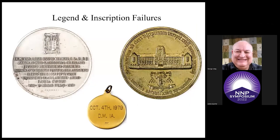This slide depicts what I call legend failures. The silver medal at left gives a very crowded Latin legend for 1961. The gilt Seminary Dedication Medal of 1926 is in a very hard-to-read type font for a two-inch medal. Finally, the 1979 medal was for the visit of Pope John Paul II to Des Moines, Iowa — a fact that, unless you were there, is really hard to figure out from the engraved code.